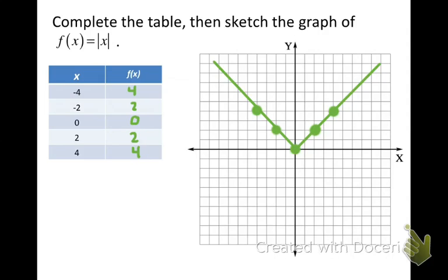One of those properties is simply that both sides of the graph of an absolute value function are linear, so they have a slope. In this case, the slope of the right side was equal to positive 1 — you can see we go up 2 over 2, which is 1. The reason the slope was positive 1 is because we had 1 times the absolute value of x.